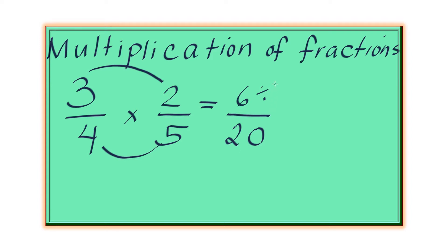So we think of a number that can divide 6 and 20. It's best to think of the largest number that can divide 6 and 20. In this case, it's 2. So reducing this 6 over 20 to 3 over 10.